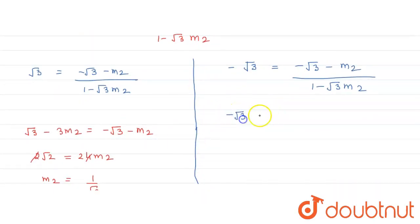So what we get? Minus root 3 plus 3 m2 equals minus root 3 minus m2. So cancel out minus root 3 from both sides. We get 4 m2 equals 0, or m2 equals 0.